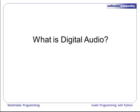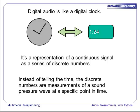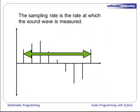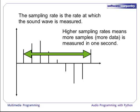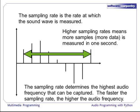Before we begin working with audio files, we need to understand what digital audio is. Digital audio is like a digital clock — it is merely a representation of a continuous signal as a series of discrete numbers. Instead of telling the time, the discrete numbers are measurements of a sound pressure wave at a specific point in time. Digital audio is measured at a sampling rate, which is the rate at which the sound wave is measured. Higher sampling rates mean that more samples are measured in one second, or that more data is collected per second. The sampling rate determines the highest audio frequency — which can be thought of as the pitch — that can be captured.